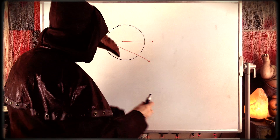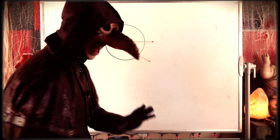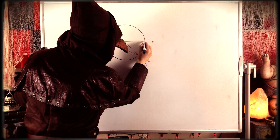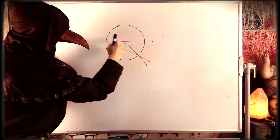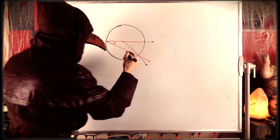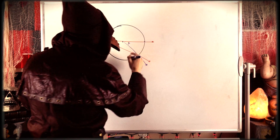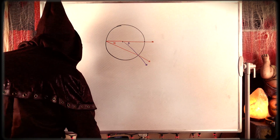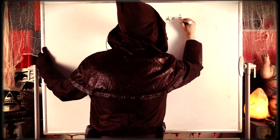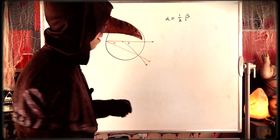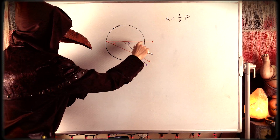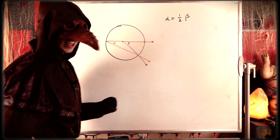The inscribed angle theorem tells us that the measure of an inscribed angle of a circle will be precisely half the measure of a central angle cutting the same arc. Here is a central angle of the circle — its vertex is the center, that's why it's called the central angle, and it cuts the same arc as the inscribed angle. Maybe we say that the measure of this central angle is beta. So alpha is half of beta. It also tells us the measure of an inscribed angle depends only on the arc that it is cutting.